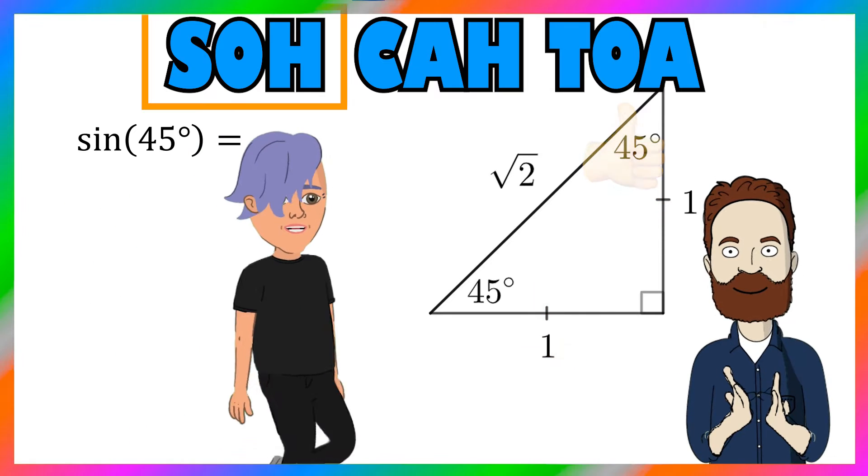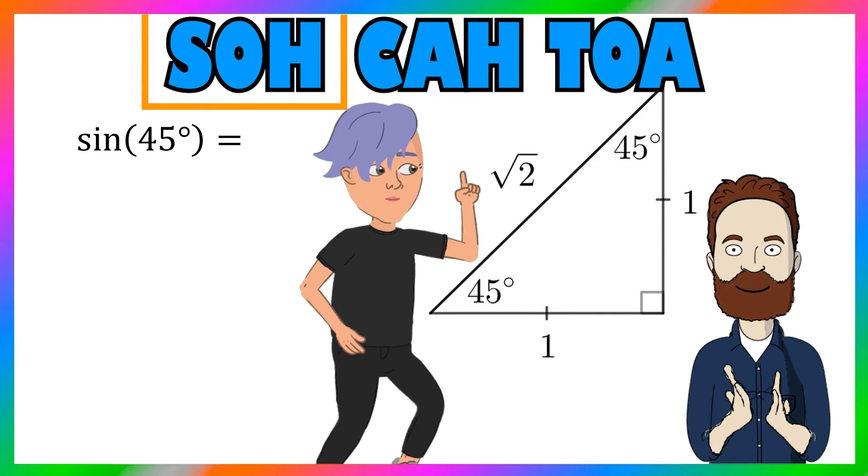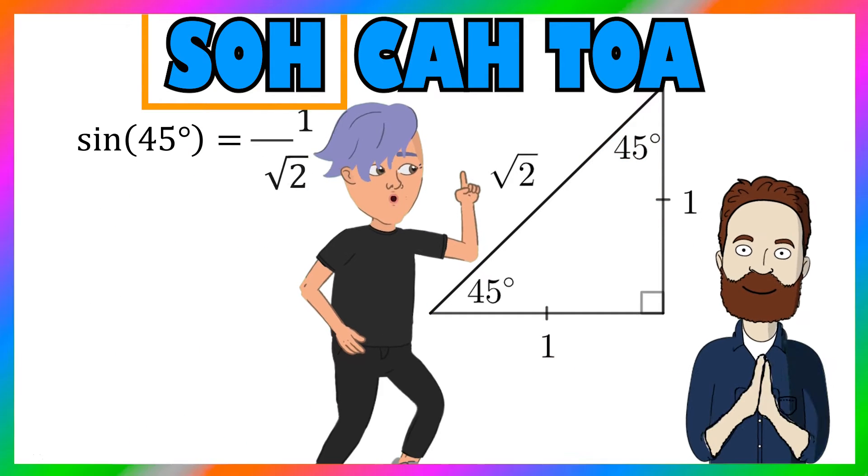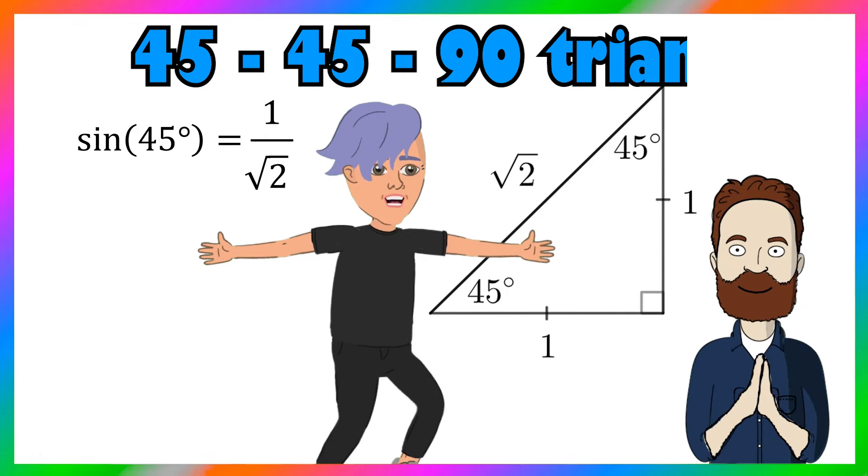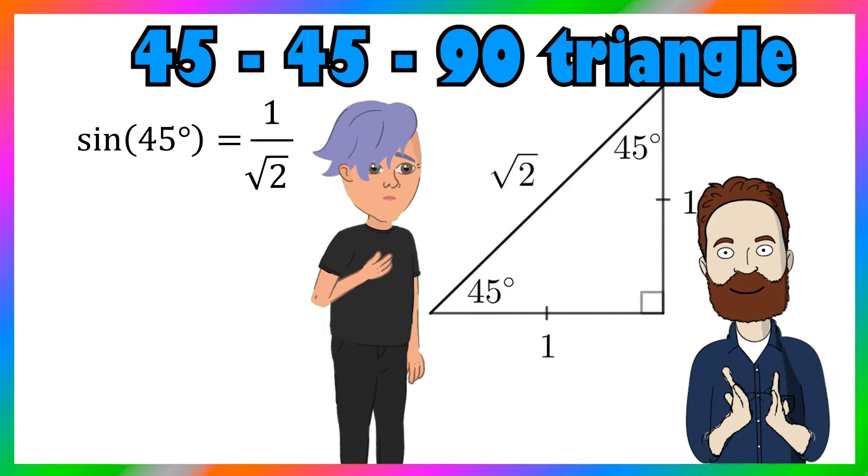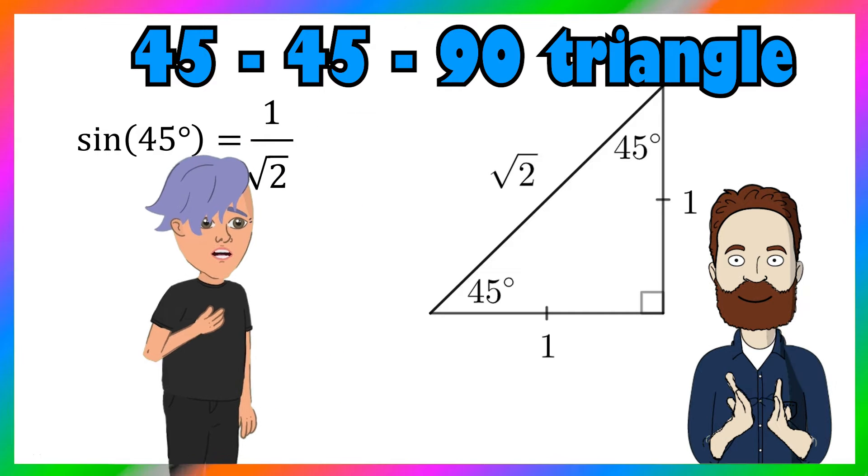So wake me up to the trig exact values. Sine of 45 is 1 over square root 2. With my 45, 45, 90 degree triangle, I know I know I won't be lost.